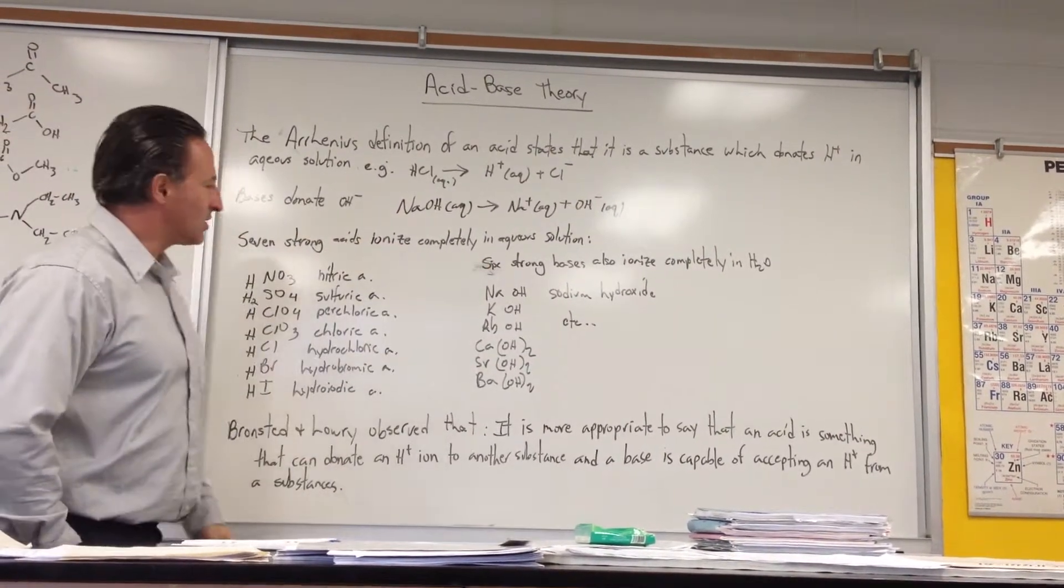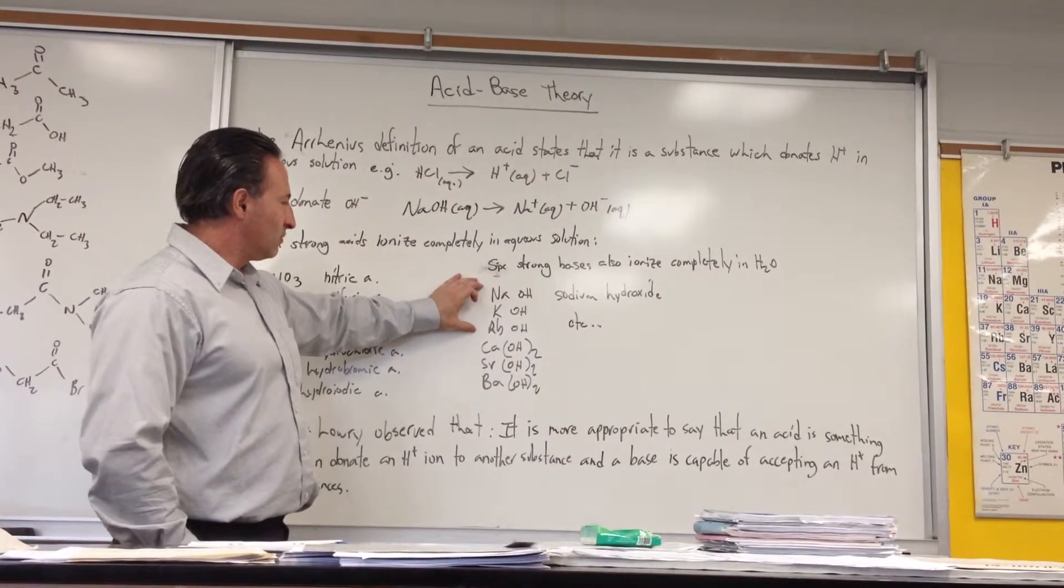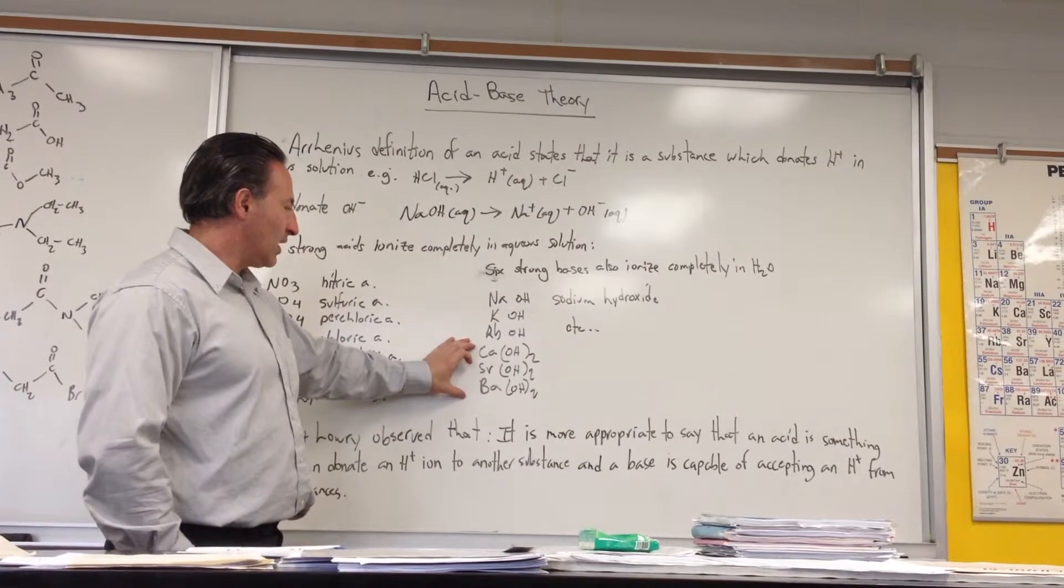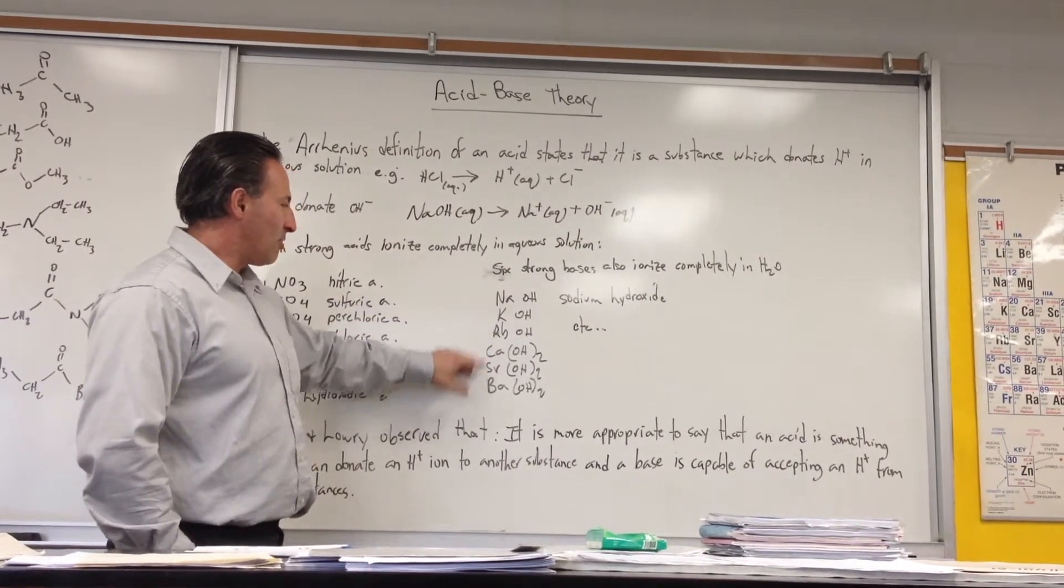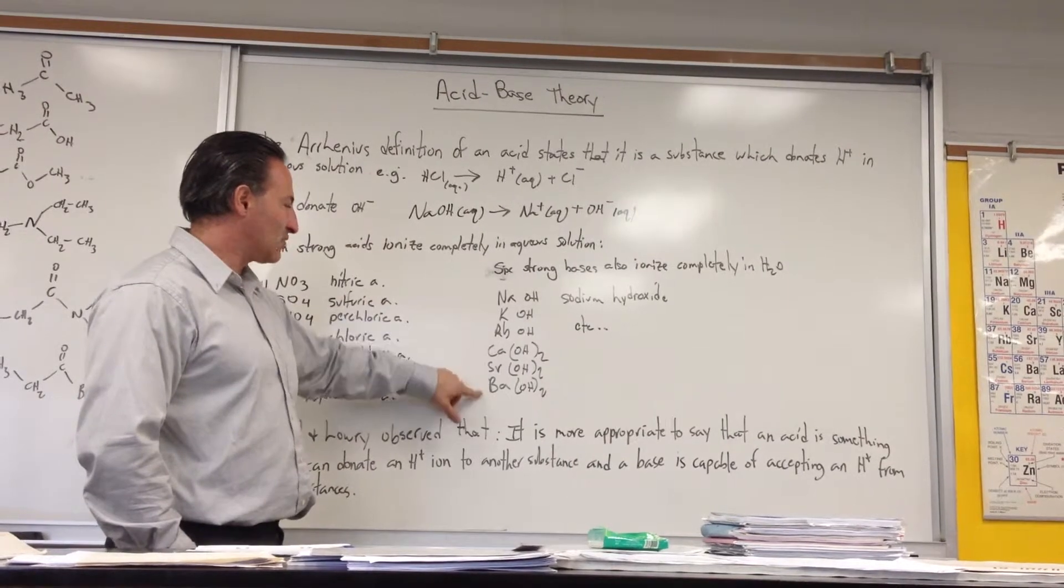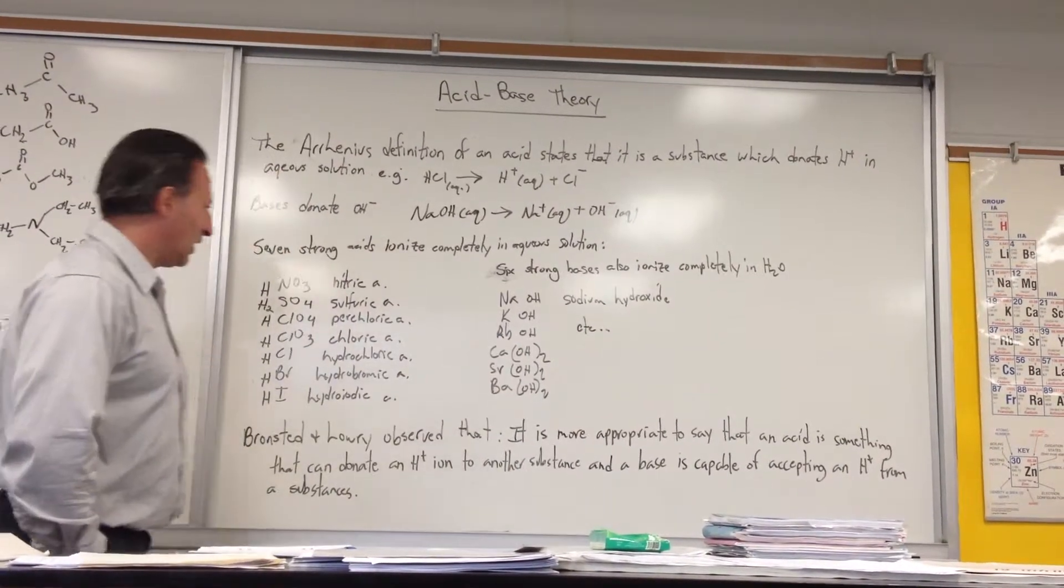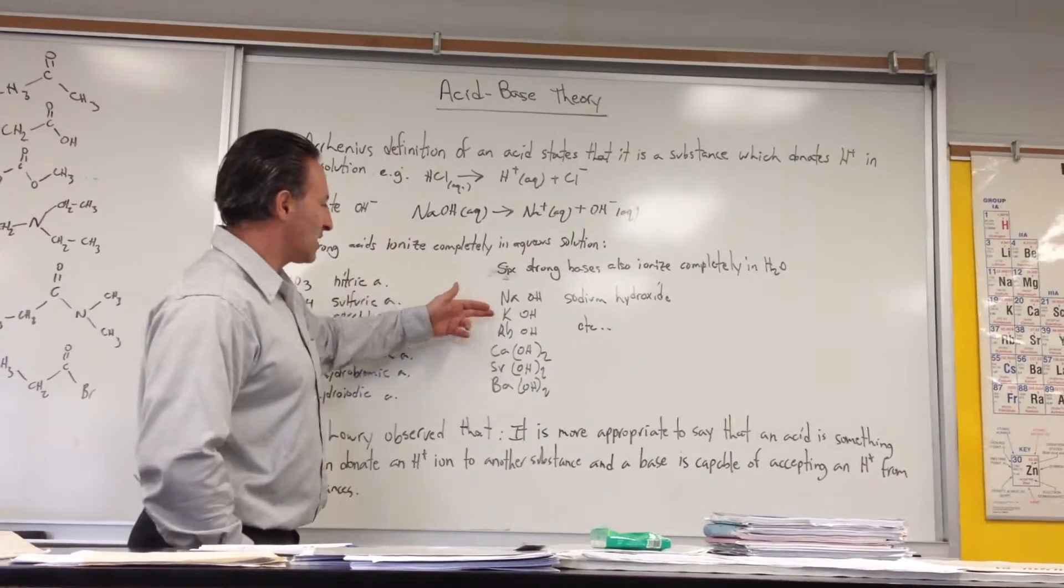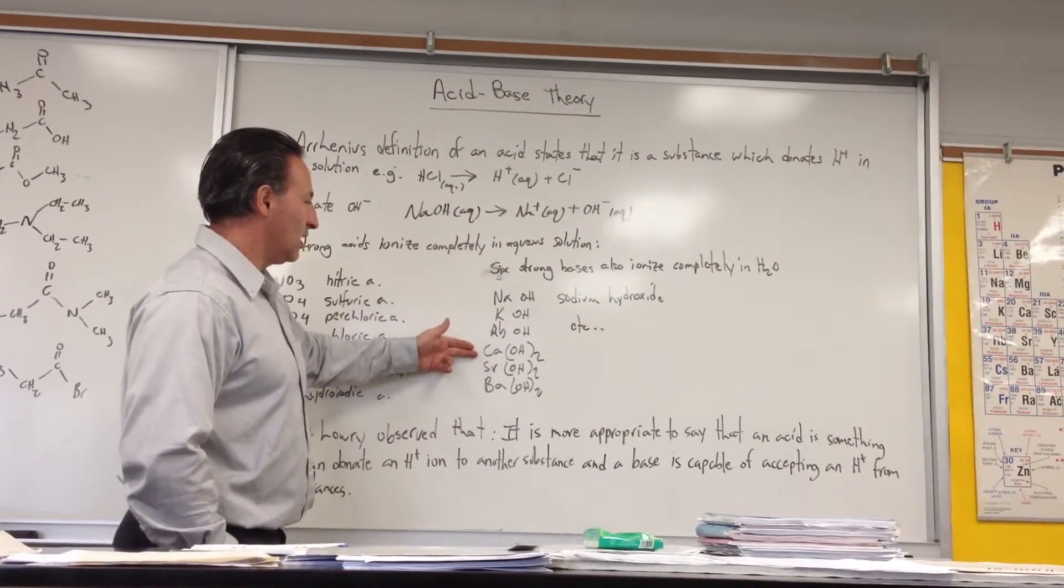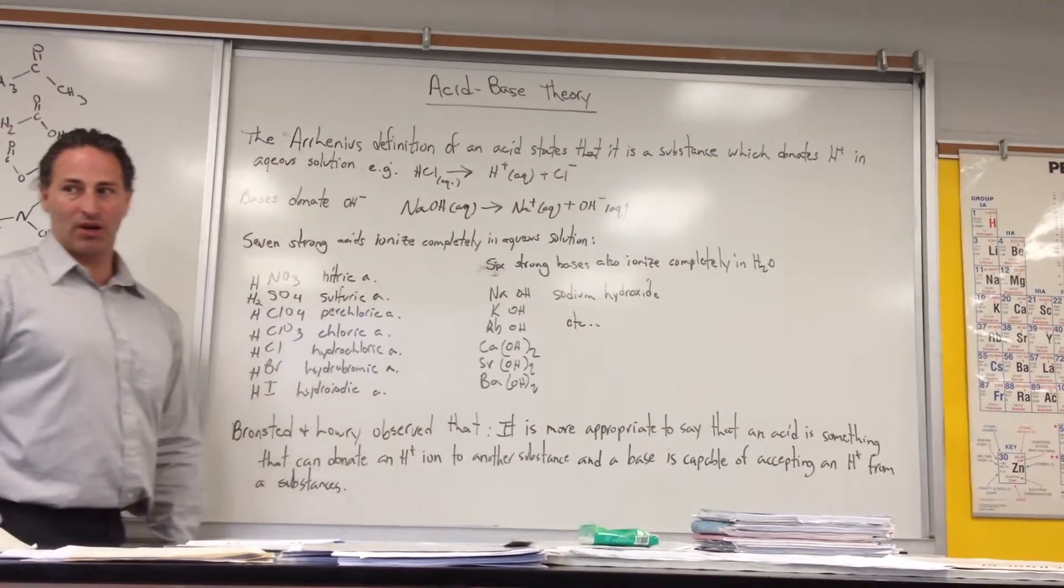There are six strong bases composed of group 1 and group 2 cations. The way you remember that is Nacrub-Casseribau: Nacrub for group 1, Casseribau for group 2. Group 2 has two hydroxide ions. They are sodium hydroxide, potassium hydroxide, rubidium hydroxide, calcium hydroxide, strontium hydroxide, and barium hydroxide.